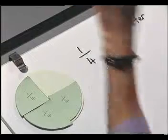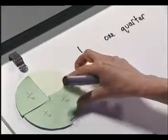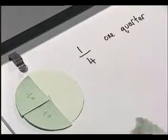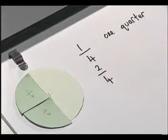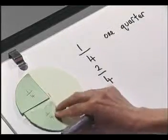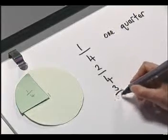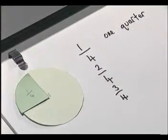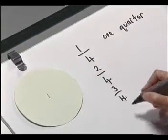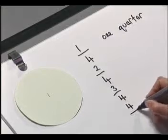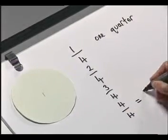I've now taken one quarter away. Now I've removed two quarters. If I take a third, that's three quarters. And if I take the fourth, so I've now got all four pieces — I've taken all of them: four quarters, which is exactly the same as taking the whole.